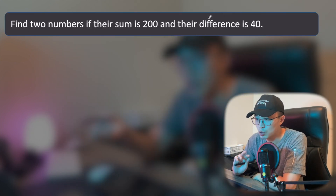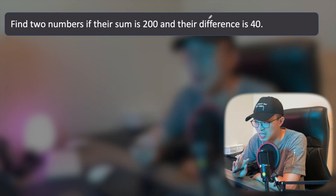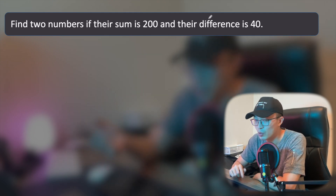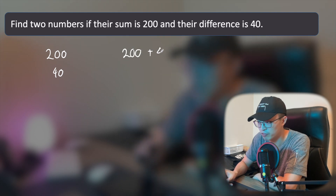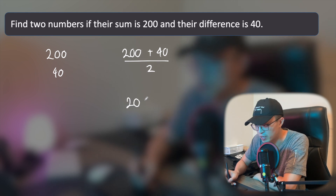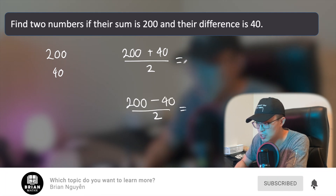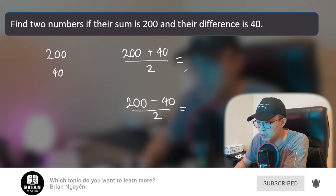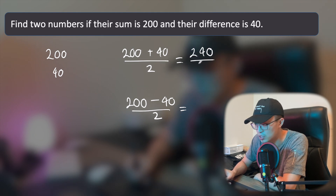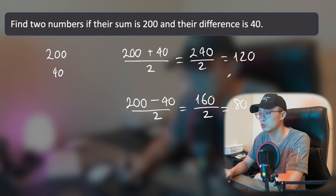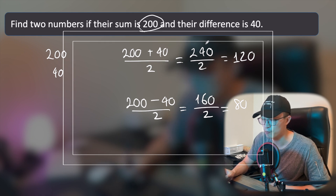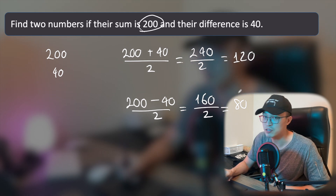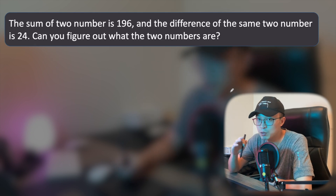Now it's your turn. The question tells you: find two numbers if their sum is 200 and their difference is 40. To find the bigger one, add them first: 200 plus 40 equals 240, divided by 2 equals 120. To find the smaller one: 200 minus 40 equals 160, divided by 2 equals 80. You can quickly verify that 120 plus 80 equals 200 and their difference is 40. Very easy!